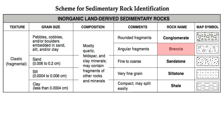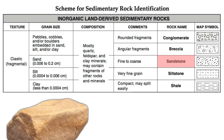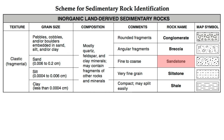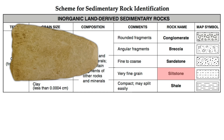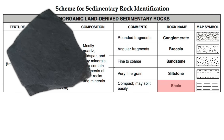If the rock is made of sand-sized sediments, we have a sandstone. Smaller sediments called silt will give us a siltstone. And even smaller particles, called clay, will give us a rock known as shale. Those are our clastic sedimentary rocks.